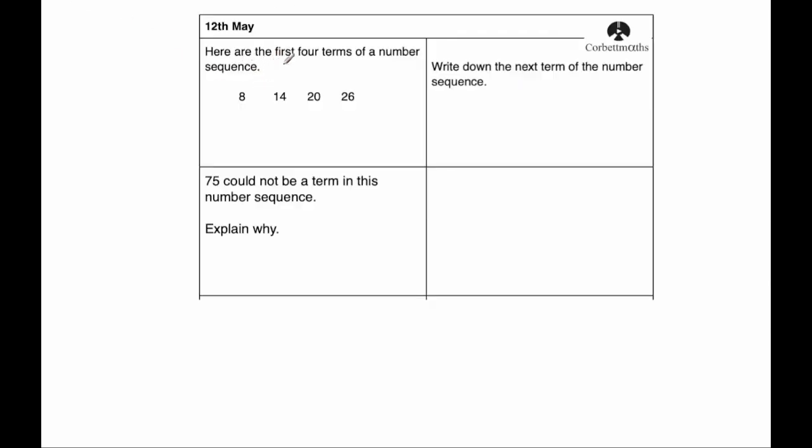Our first question says, here are the first four terms of a number sequence. So they go 8, 14, 20 and 26. And as you can see, they're increasing by 6 each time. So it's adding 6, add 6 and so on.